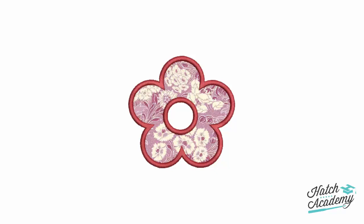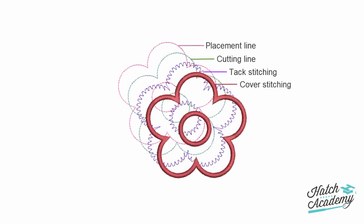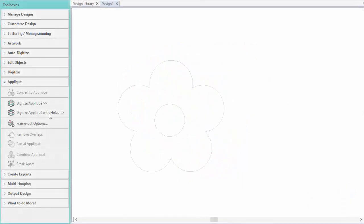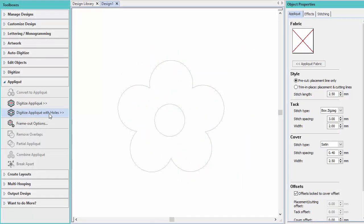Appliqué is an embroidery technique where fabric is used to fill an object instead of stitching. Use the Digitize Applique with Holes tool to digitize closed objects with holes with up to four layers of stitching. When the Digitize Applique with Holes tool is selected, the Appliqué tab of the Object Properties docker is displayed.